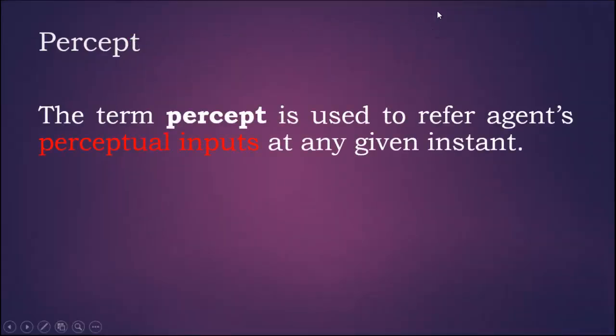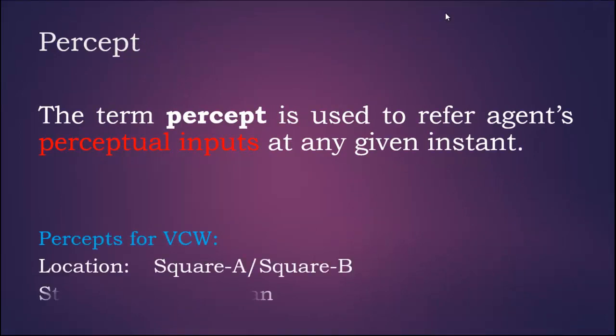The term percept is used to refer to agents' perceptual inputs at any given instant. For vacuum cleaner agent we are having two inputs: its location either A or B, and status of square either clean or dirty.